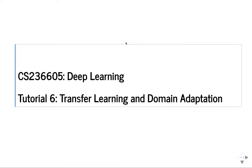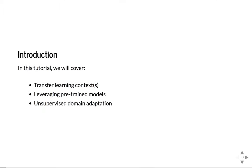Today, Tutorial 6, we're going to talk about a concept called transfer learning and domain adaptation — two related concepts. Specifically, we'll talk about the context of transfer learning, define it, and then show two different examples: how to use pre-trained models for other tasks, and the concept of domain adaptation.